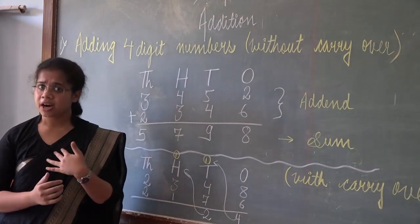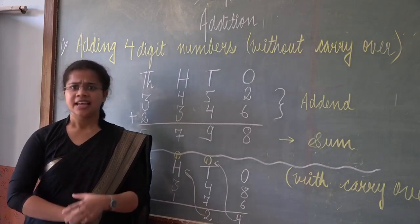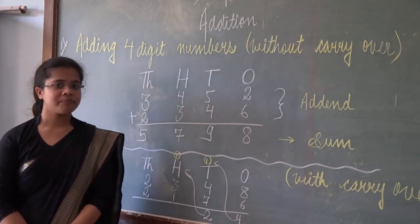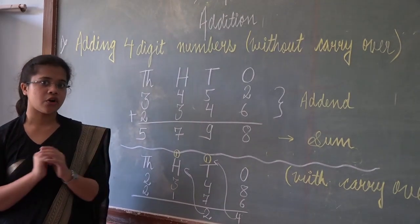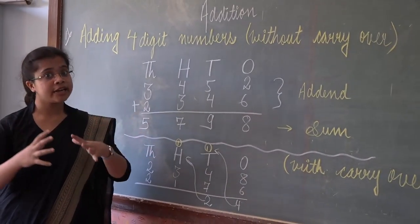Suppose if I give you 5 chocolates and your mom gives you 5 chocolates then how many chocolates do you have? You are having 10 chocolates. So what have we done? We just need to put it together.